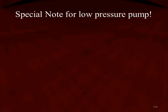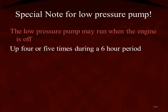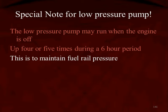A special note for the low pressure system: the low pressure system is what we normally work with — it's a fuel pump inside the fuel tank that delivers fuel to the high pressure pump. The low pressure pump may run when the engine is off. This pump may run up to four or five times during a single six-hour period to maintain fuel rail pressure. If the computer recognizes that the common rail pressure has dropped to a certain level, it will operate the fuel pump in the fuel tank to deliver fuel to the common rail.